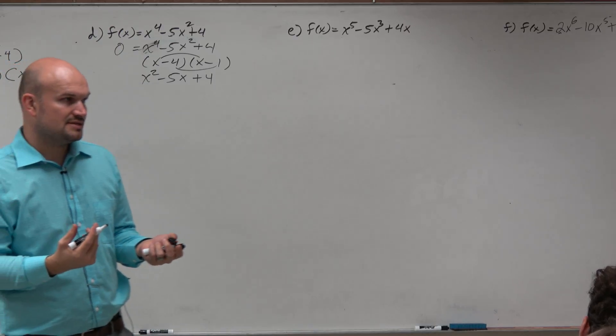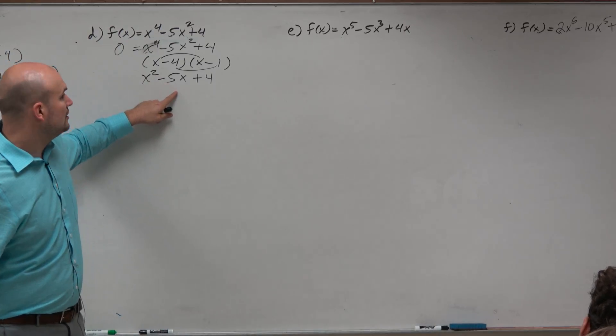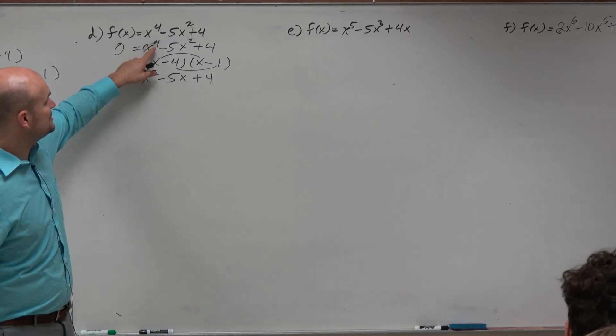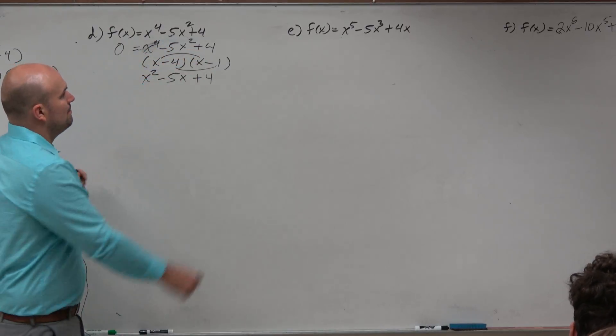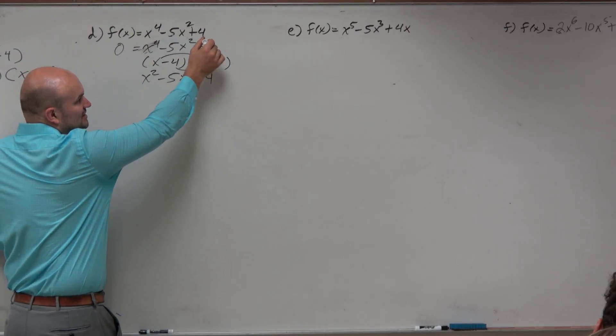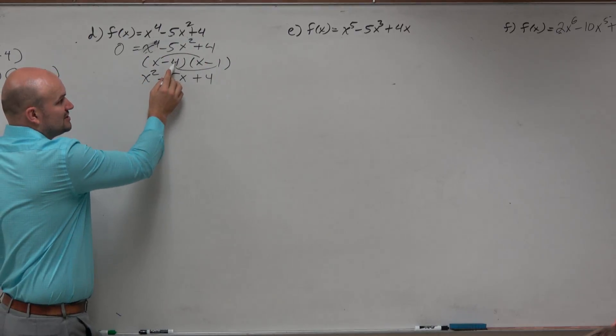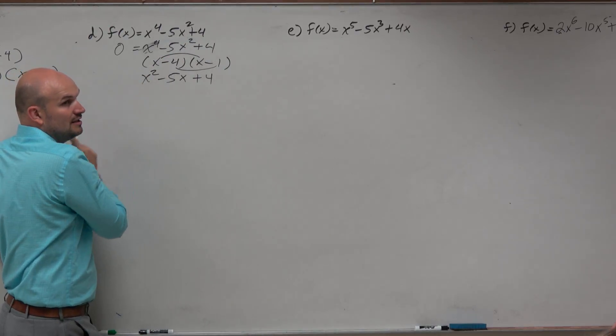So our problem is, we're not factoring a quadratic. We're factoring something where x to the fourth minus 5x squared plus 4. My last two terms still need to multiply to give me a positive 4. So does negative 4 times negative 1 still give you that? Yes.